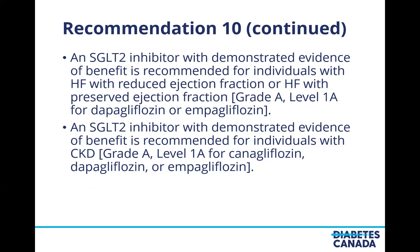The rest of recommendation ten addresses other situations beyond high cardiovascular risk. An SGLT2 inhibitor with demonstrated evidence of benefit is recommended for individuals with heart failure with either reduced or preserved ejection fraction, and also for individuals with chronic kidney disease. Note that the FLOW trial in patients with chronic kidney disease examining a specific GLP-1 receptor analog was published after our evidence review was completed, so we did not make a recommendation about its use in this guideline. A forthcoming update to the chronic kidney disease guideline will address that trial.